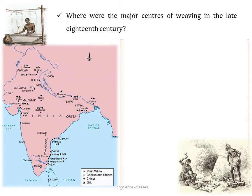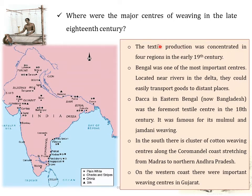The textile production was concentrated in four regions in the early 19th century. Bengal was one of the most important centres, located near rivers that allowed easy transport of goods to distant places. Dhaka in eastern Bengal, now Bangladesh, was the foremost textile centre in the 18th century. In the south there was a cluster of cotton weaving centres along the Coromandel coast stretching from Madras to Andhra Pradesh — including Pondicherry, Nagapatnam, and Masulipatnam. In the west, there were also important weaving centres in Gujarat.